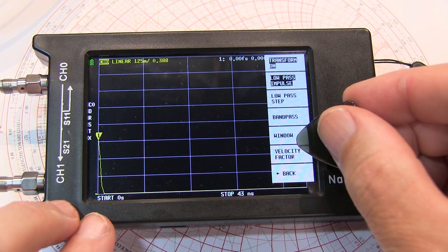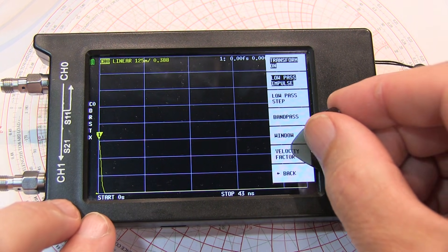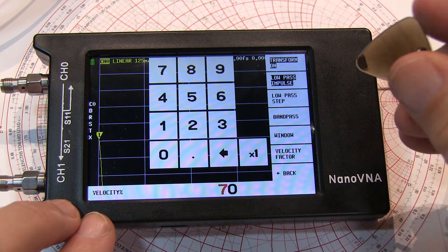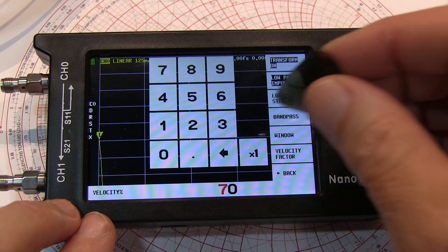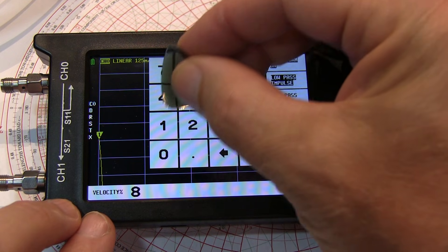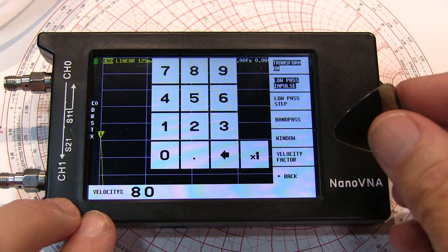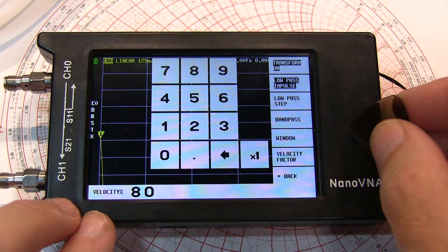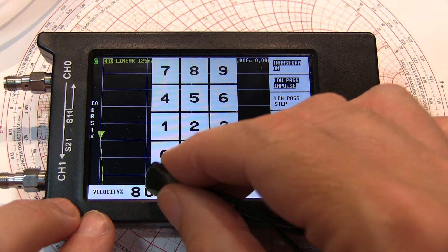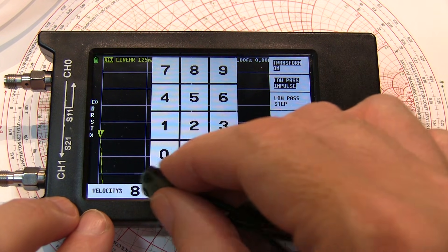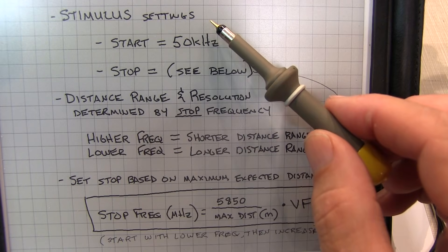This RG8U has foam dielectric, typically a velocity factor between 78 and 85. We'll just put in 80 for the velocity factor. When doing that on the NanoVNA, you don't want to put the decimal like 0.8, you actually want to put the percentage, so 80%. We set the stimulus next.